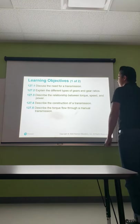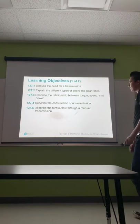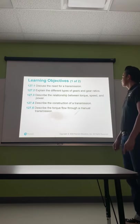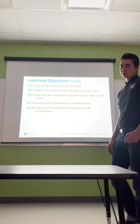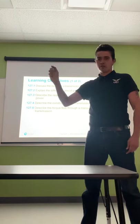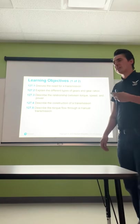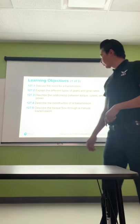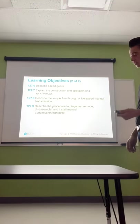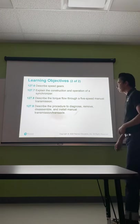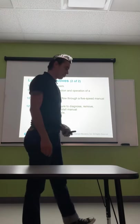Let's go over the objectives. We're going to discuss the need for a manual transmission and why we have them in vehicles. I'll explain the different types of gears and gear ratios, describe the relationship between torque, speed, and power, describe the construction of a transmission, and describe the torque flow through a manual transmission. That's the most important part — how power gets transferred. When you hear about changing gears, we're not switching giant gears around; we're engaging something called a synchronizer. We'll also describe the procedure to diagnose, remove, disassemble, and install a manual transmission or transaxle.